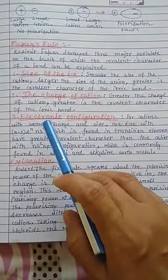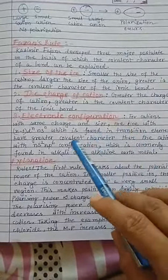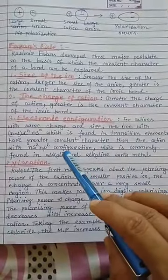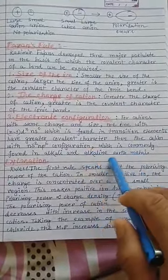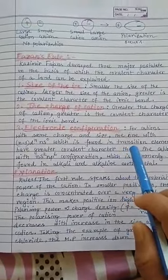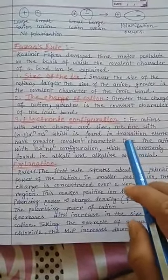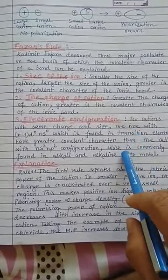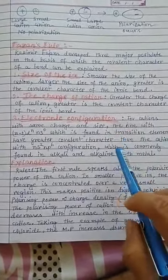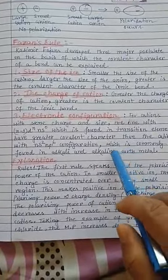The third postulate concerns electronic configuration. For cations with the same charge and size, those with an (n-1)d, ns0 configuration — found in transition metal elements — have greater covalent character than cations with ns2, np6 configuration found in alkali and alkaline earth metals. This is because d orbitals have very low screening power, so the effective nuclear charge felt by outer electrons is higher for transition elements, imparting more polarizing power.